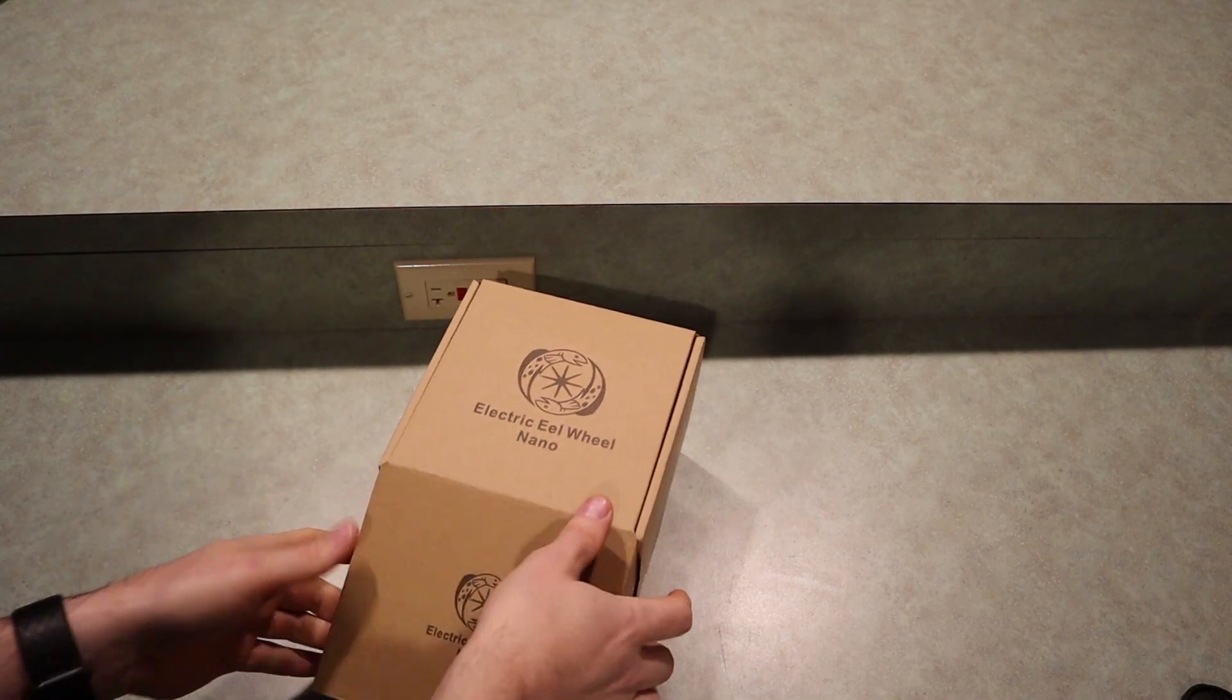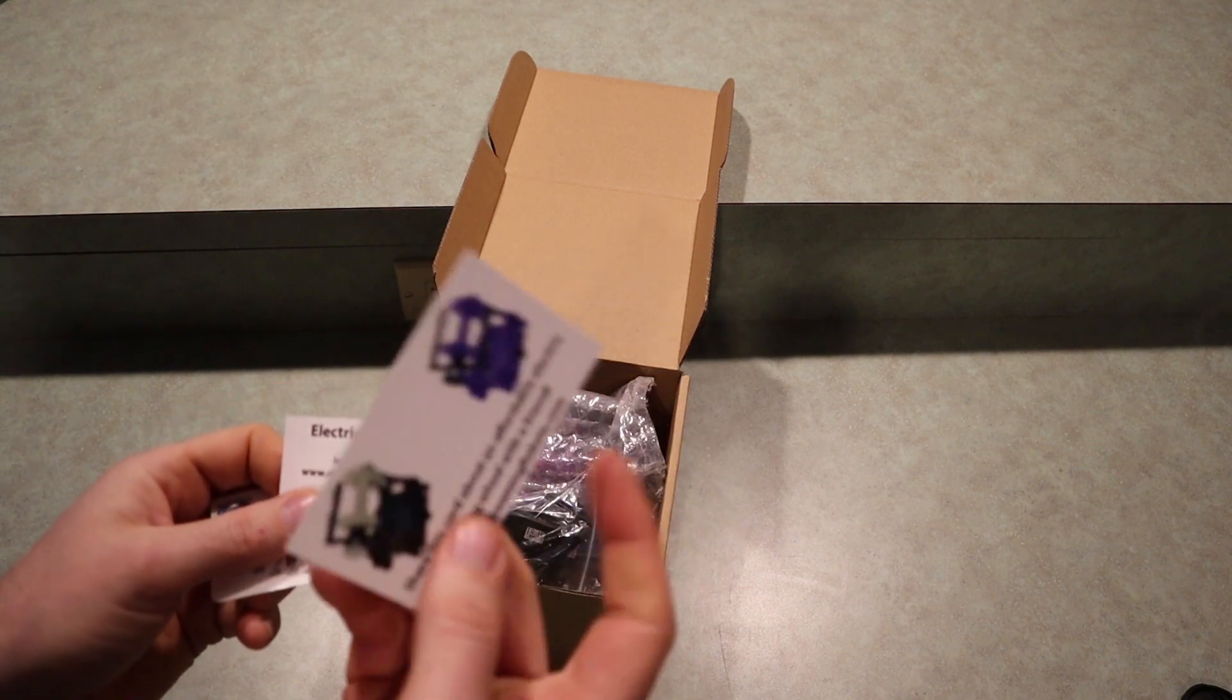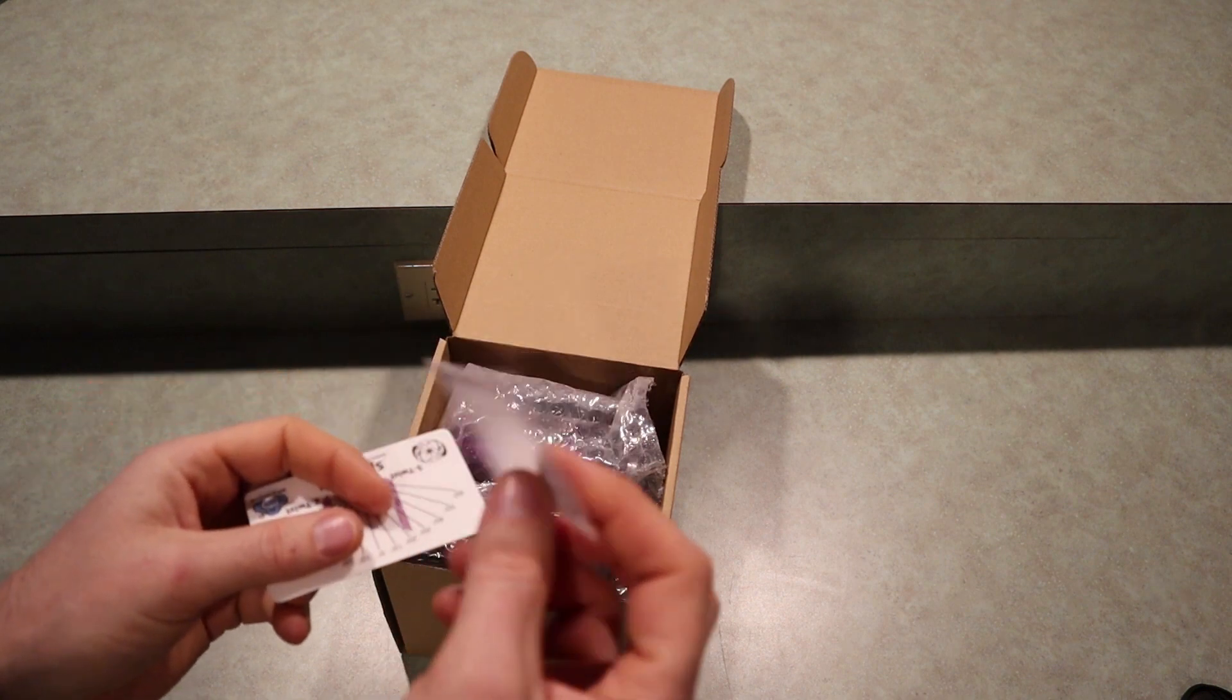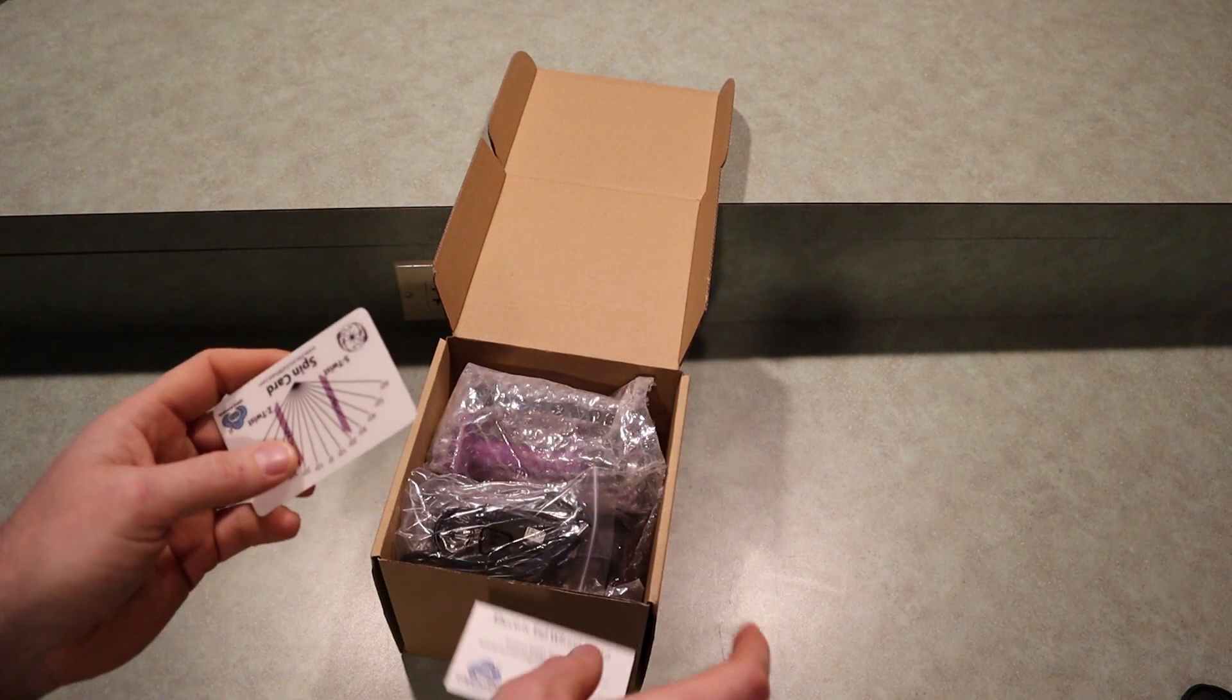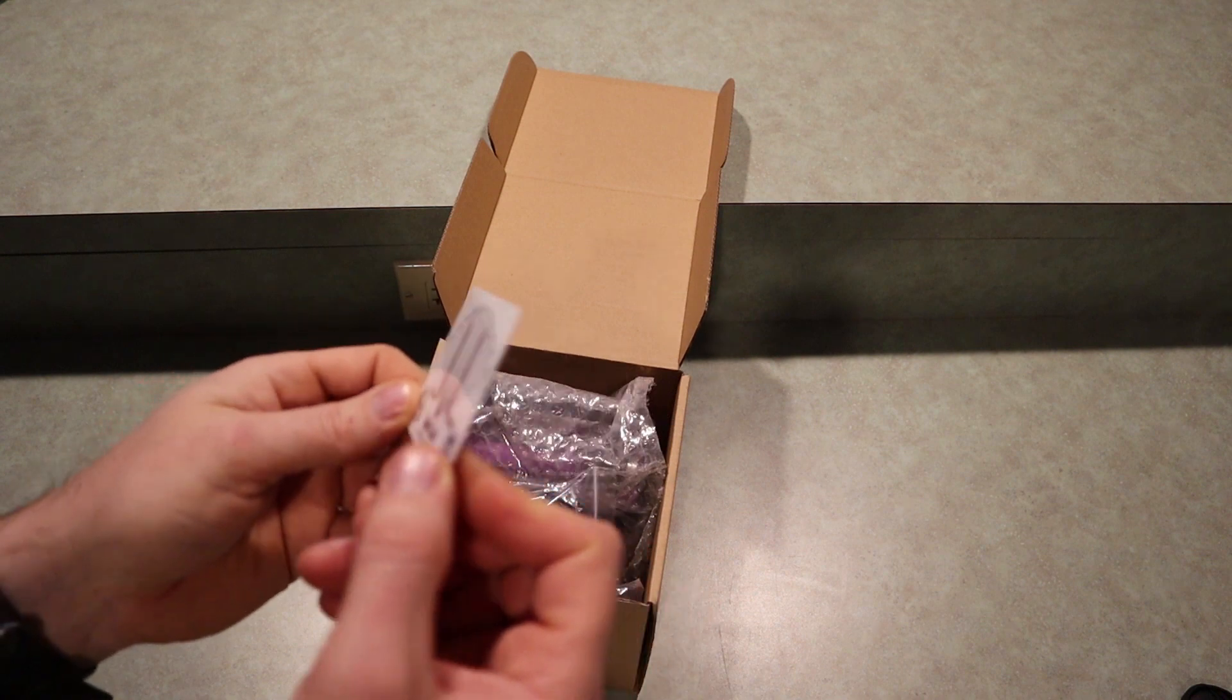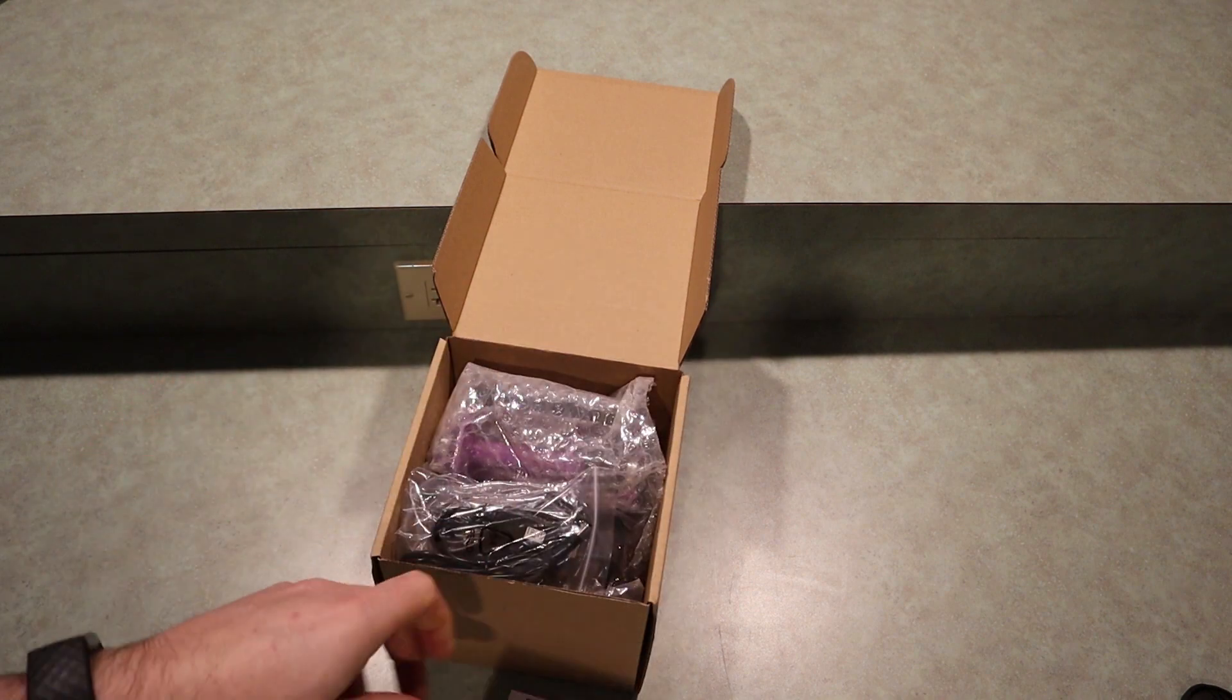This is the box that the Electric Eel Wheel Nano 1.1 comes in. Inside you will find a card that you can share with your friends, a card that goes to the instructions on how to use it, and a nice plastic spin card. We'll talk about how to use this a little bit later in the video.